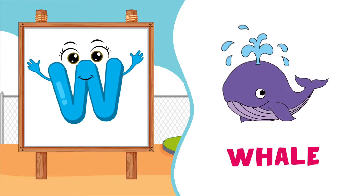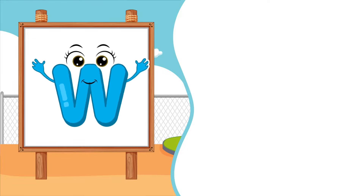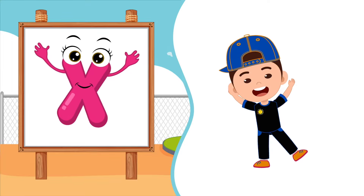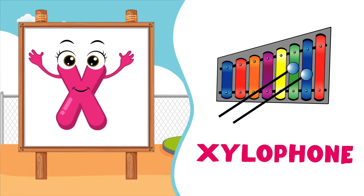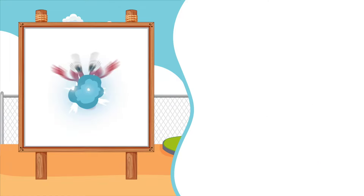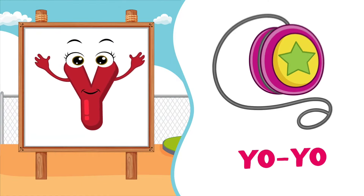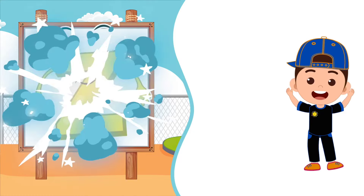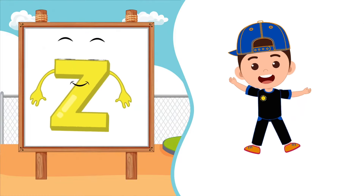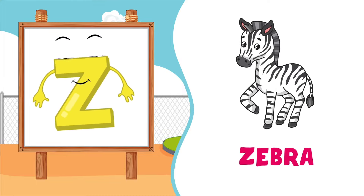X is for Xylophone, Z-Xylophone, X-Xylophone. X, Xylophone. Y is for Yo-Yo, Y-Yo-Yo, Y-Yo-Yo. Y, Yo-Yo. Z is for Zebra, Z-Zebra, Z-Zebra, Z-Zebra.